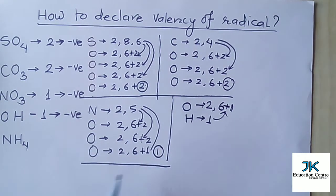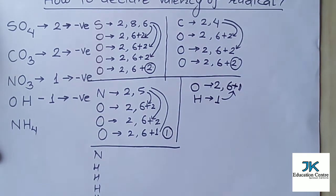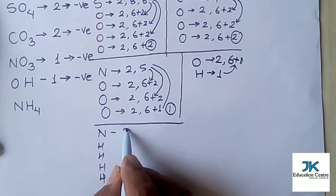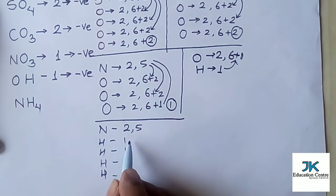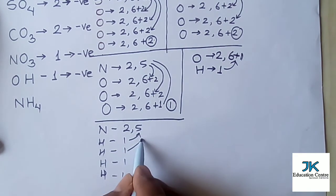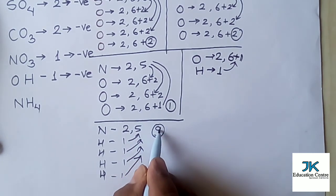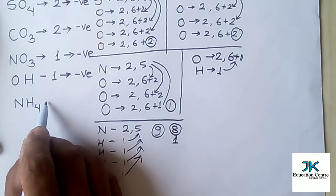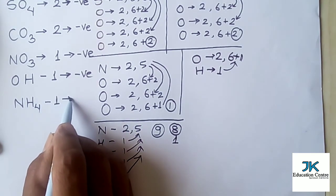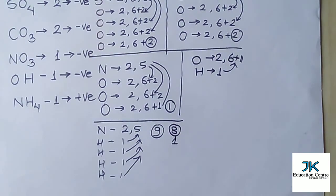Now let's talk about ammonium. It has nitrogen and four hydrogen atoms. Nitrogen's electronic configuration is 2 and 5, giving seven electrons in the outer shell. Each hydrogen shares its one electron with nitrogen, so 5 plus 4 gives 9 electrons. Eight of these form the octet, and the one extra electron is donated in the chemical reaction. That's why ammonium's valency is one, and since it donates electrons, it is electropositive. This way we can also declare the valency of radicals.